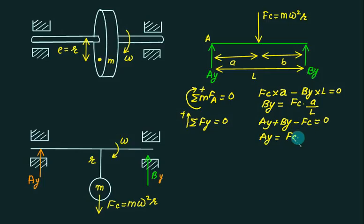So this is Fc minus Fc multiplied by A divided by L. So I can multiply this L here, so L is common. And when I multiply, instead of Fc I will write A plus B. L is multiplied, and L is equal to A plus B.